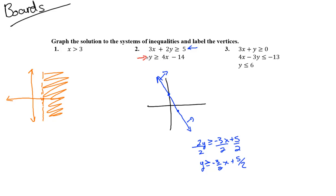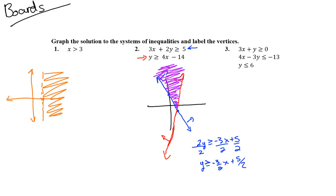The red inequality y ≥ 4x - 14 is already in slope-intercept form. Y-intercept is -14, slope is 4 — it's a solid line going steeply upward. Since y ≥, we shade above that line too. The purple overlapping region — where both blue and red are colored — gives us the solution region with one vertex.